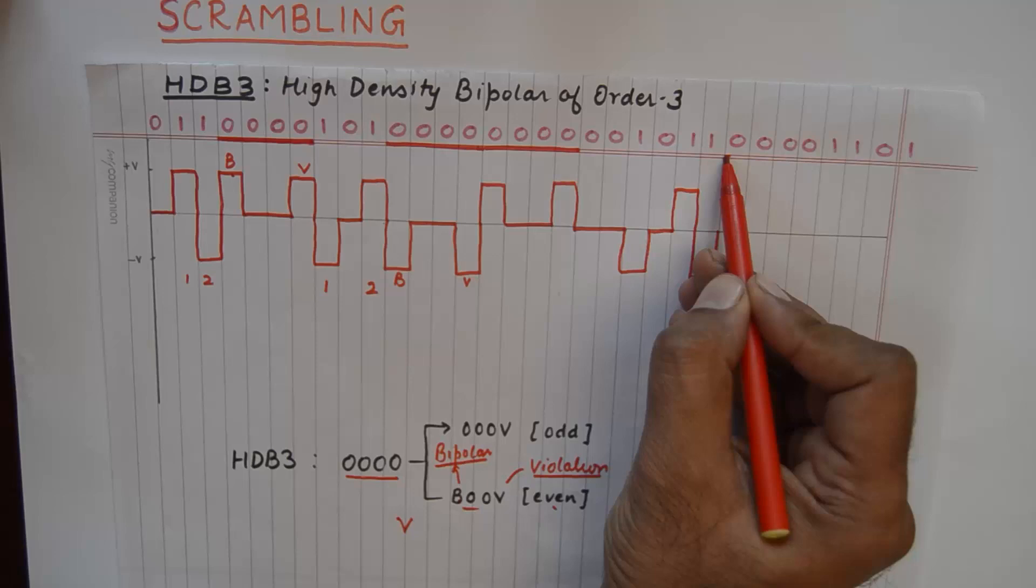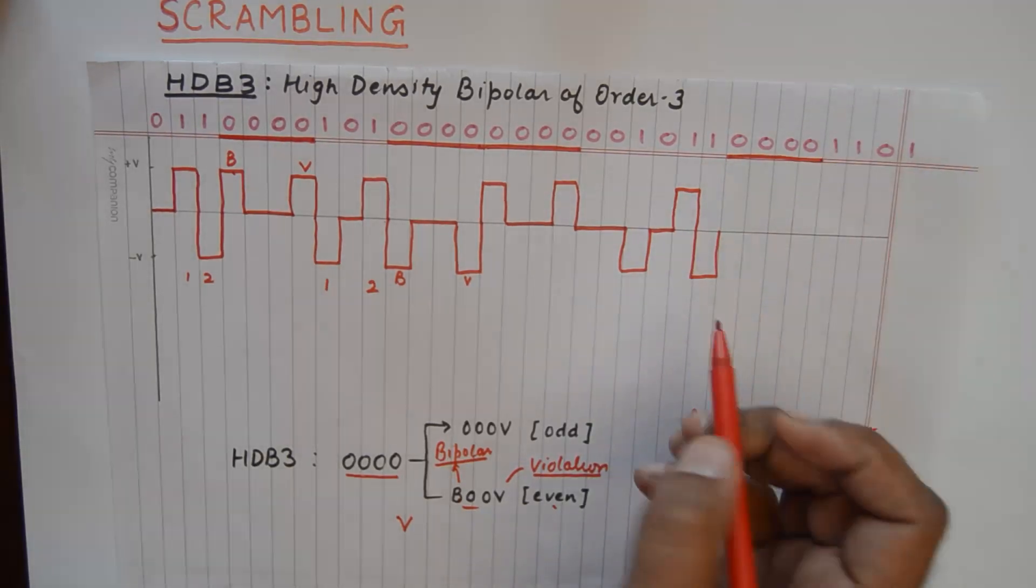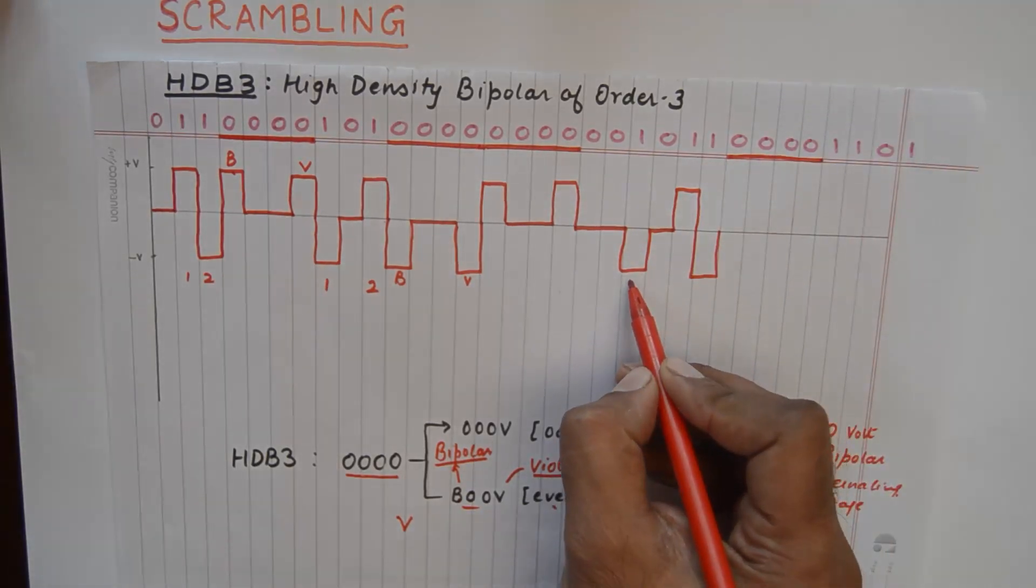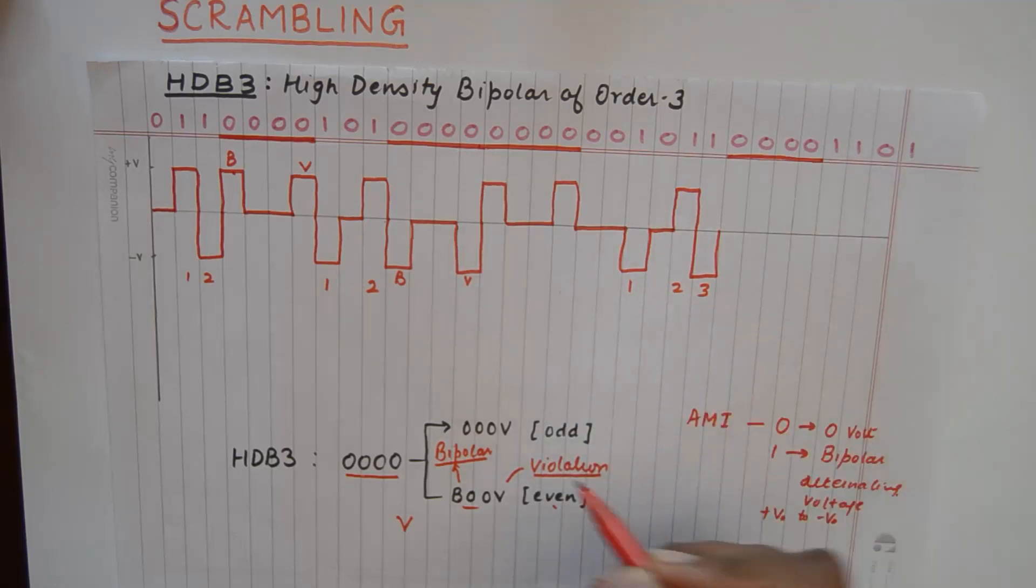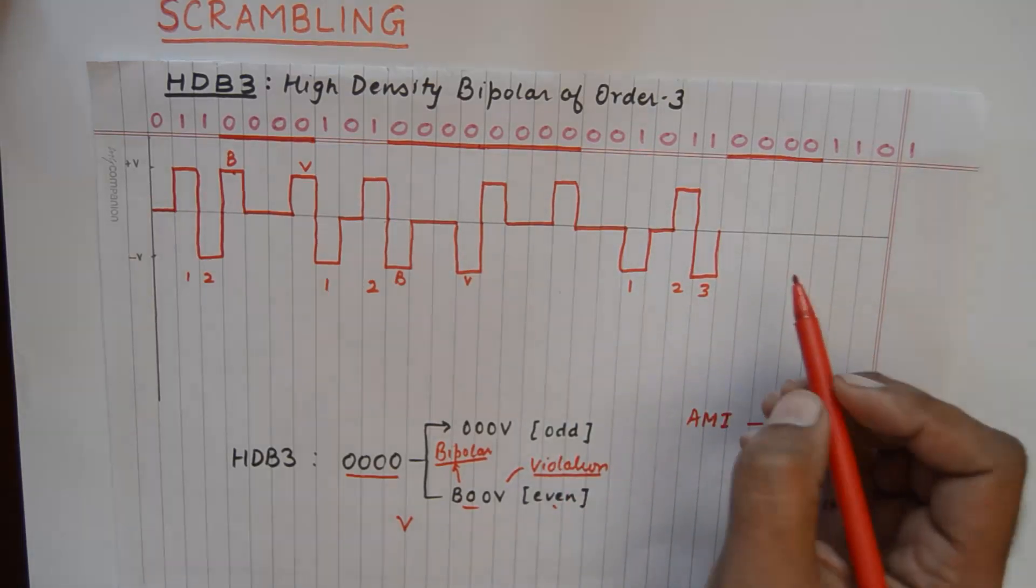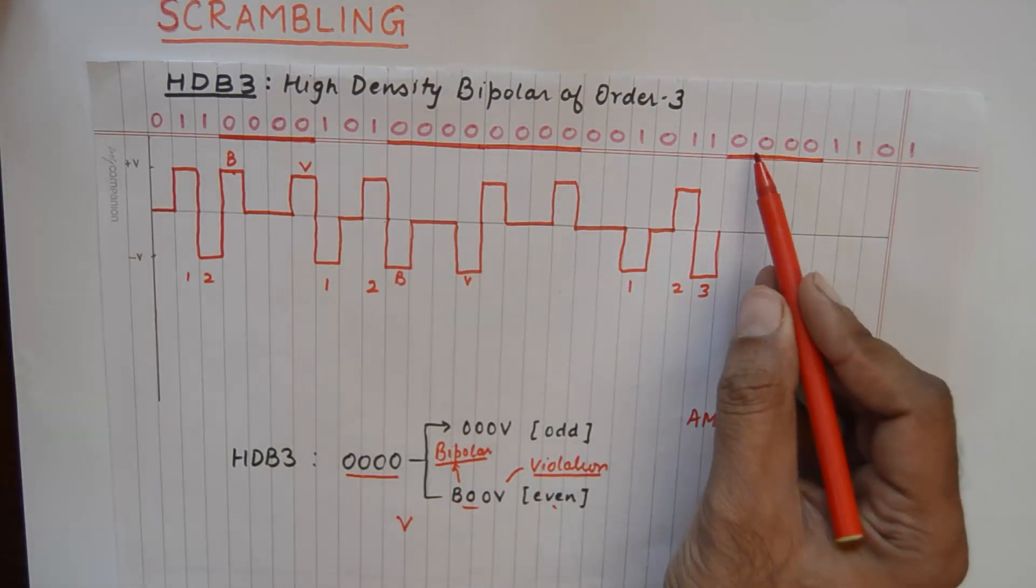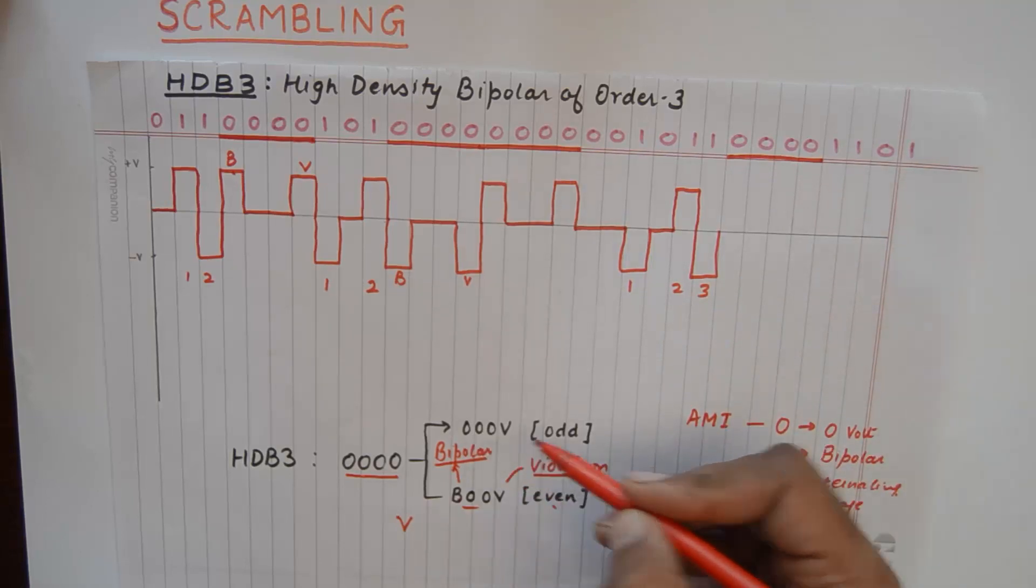Then we have again four zeros. Now please understand these four zeros have previously three ones. One, two and three. So this becomes a case of odd. So for odd, these three zeros will be represented using zeros.